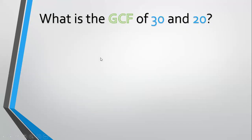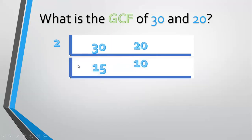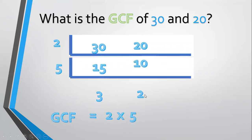Another example, what is the GCF of 30 and 20? Align 30 and 20. Divide by a prime common factor, 2. 30 divided by 2 equals 15. 20 divided by 2 equals 10. Divide again by a prime common factor, 5. 15 divided by 5 equals 3. 10 divided by 5 equals 2. 3 and 2 have no common factor. So the GCF is equal to 2 times 5 equals 10.